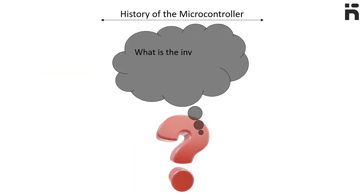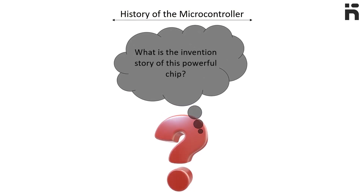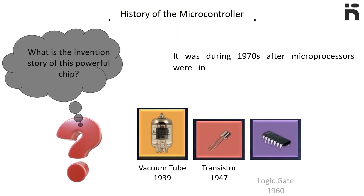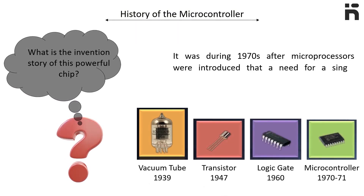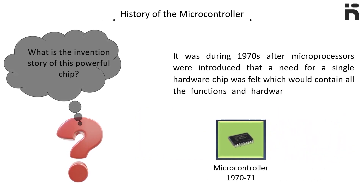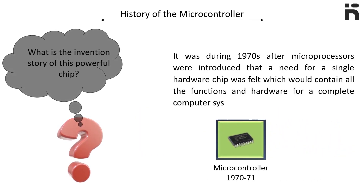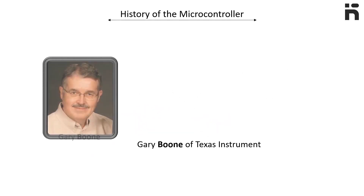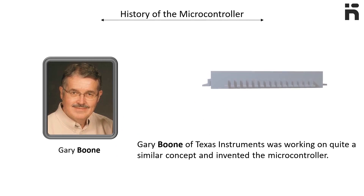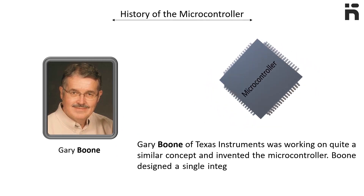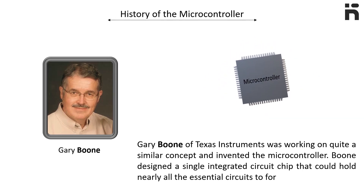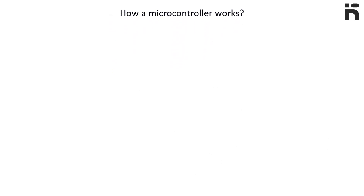What is the invention story of this powerful chip? During the 1970s, after microprocessors were introduced, a need for a single hardware chip was felt that would contain all the functions and hardware for a complete computer system. Gary Boone of Texas Instruments was working on a similar concept and invented the microcontroller — a single integrated circuit chip that could hold nearly all the essential circuits to form a calculator.